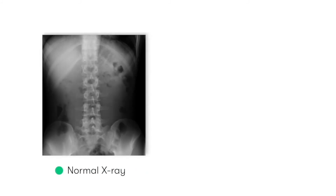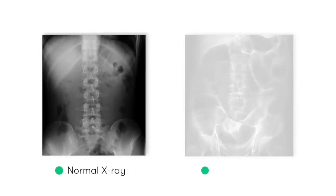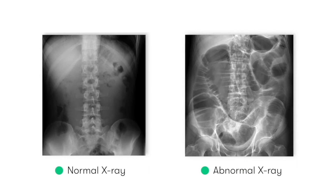Here you can see a normal abdominal x-ray, and next to it an abdominal x-ray that shows large bowel dilatation in keeping with the presence of a large bowel obstruction. It's pretty clear to see that there's an obvious difference between the two.